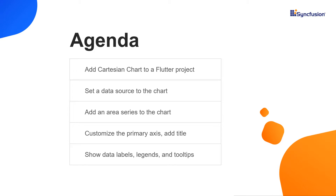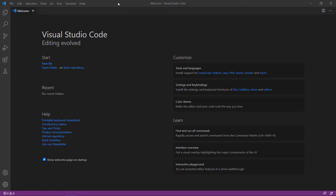Then I will explain how to customize the primary axis, add a title, and show data labels, legends, and tooltips in the area chart.